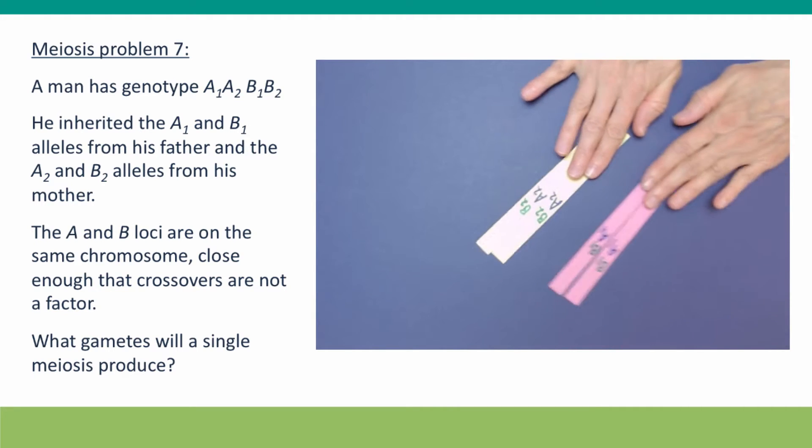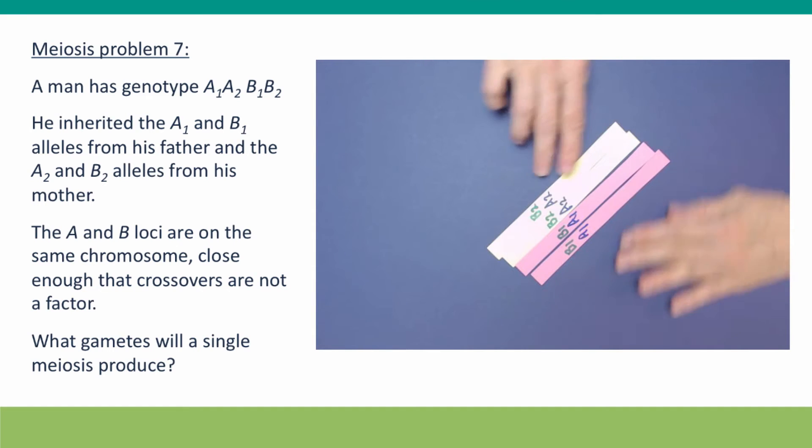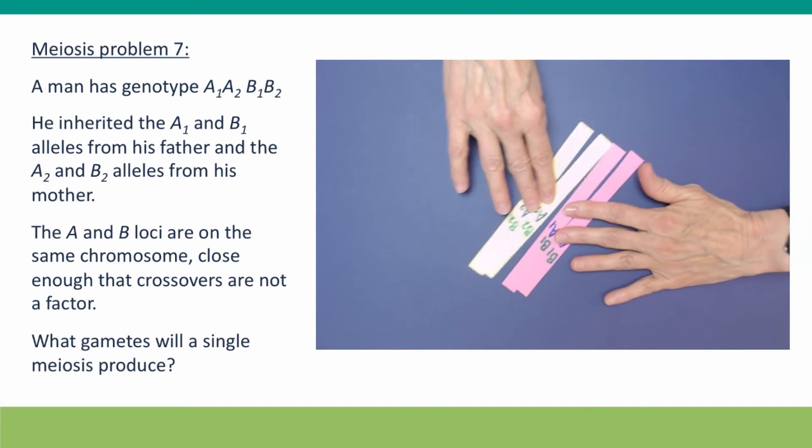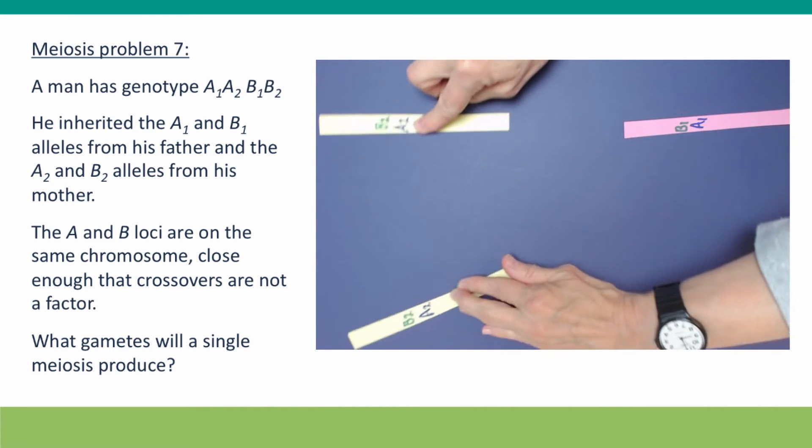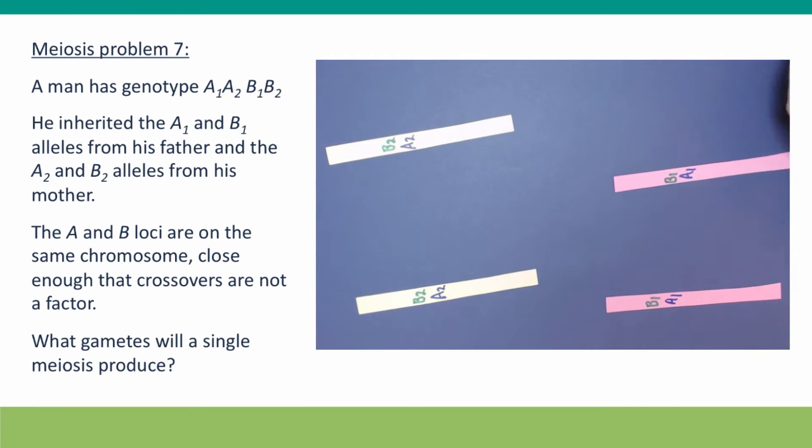The DNAs replicate, the homologs pair, the cell pulls them apart, the cell divides, they separate again, the cell divides. We have two A1, B1 gametes and two A2, B2 gametes.